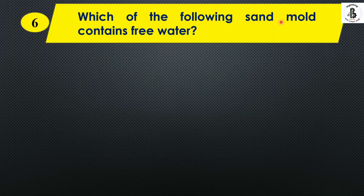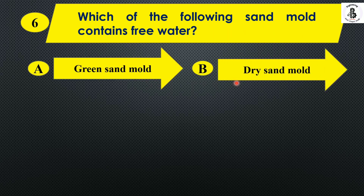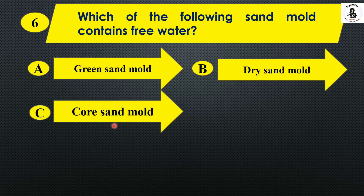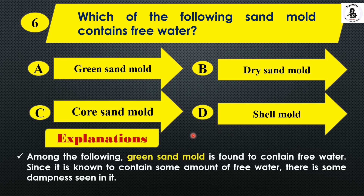Question 6: Which of the following sand molds contains free water? Option A: green sand mold. Option B: dry sand mold. Option C: coarse sand mold. Option D: shell mold. The green sand mold is found to contain free water — since it contains some amount of free water, there is some dampness seen in it. So the right answer is Option A, green sand mold.